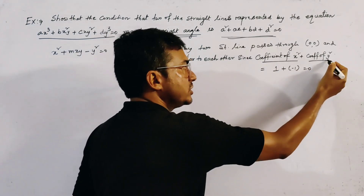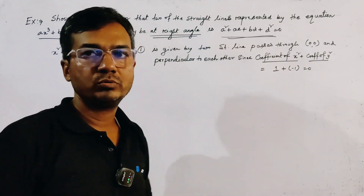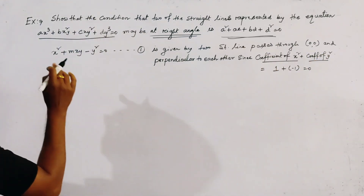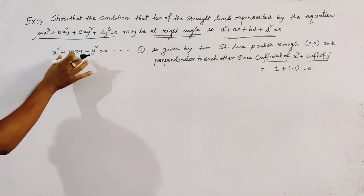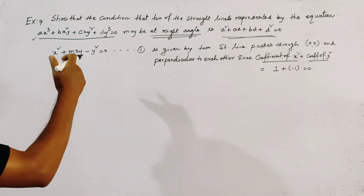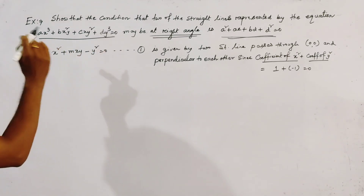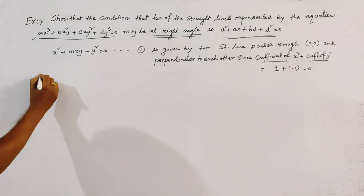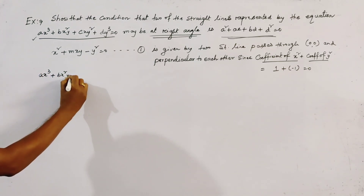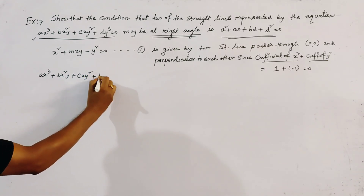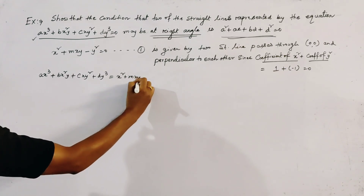These two lines represented by this pair are perpendicular to each other because the coefficient of x² plus the coefficient of y² equals 1 + (-1) = 0. Since the given equation represents this perpendicular pair, it must also represent one more factor of degree 1 in x and y. So we compare with the given equation ax³ + bx²y + cxy² + dy³.